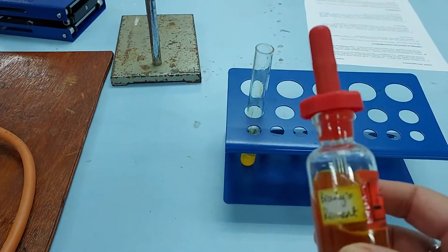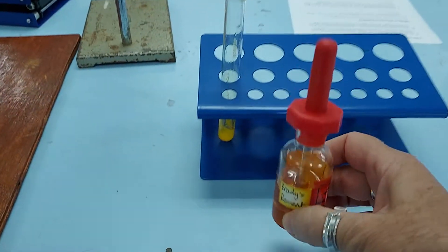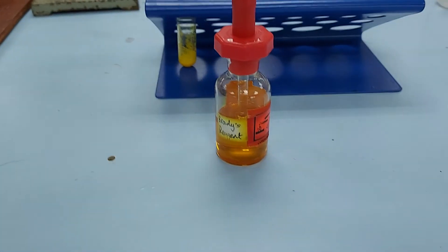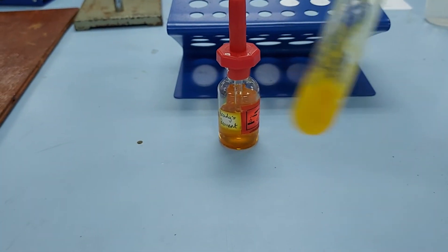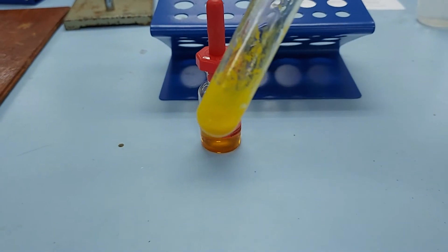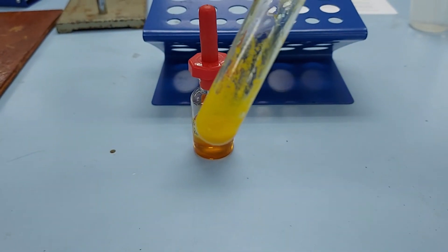We tested our product with Brady's reagent, an orange solution here. You can see we've got a positive test with a lovely precipitate formed, which indicates that we have made an aldehyde.